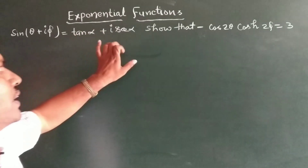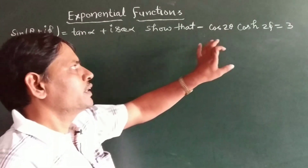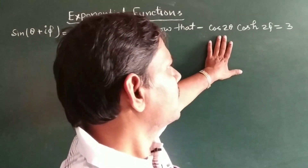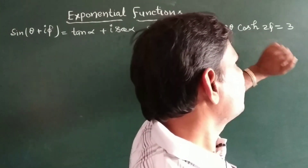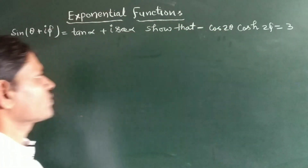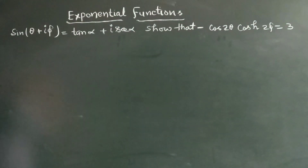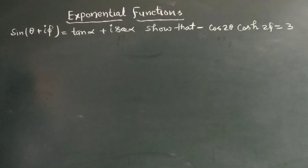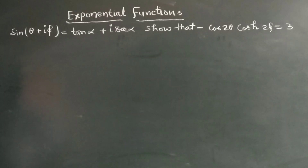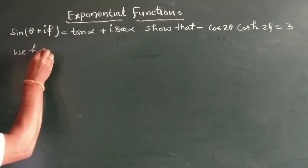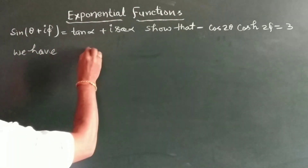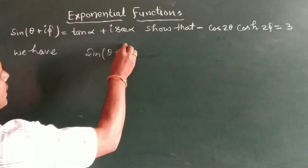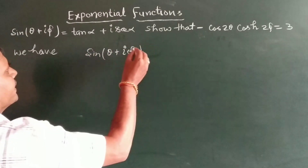The problem: if sin(θ + iφ) is equal to tan α + i·sec α, show that cos(2θ)·cosh(2φ) is equal to 3. We may write the equation from the given problem: sin(θ + iφ) is equal to tan α + i·sec α.